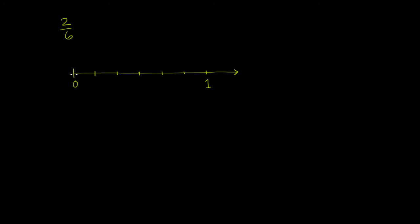When we're going between 0 and 1, we have 1, 2, 3, 4, 5, 6 of these marks. Or another way to think of it is these marks split the length of our number line between 0 and 1 into exactly six equal spaces.